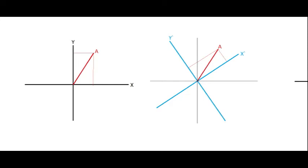In this video I'm going to talk about coordinate system transformations. What I have here is our original axes — the nice vertical and horizontal, 90 degrees from each other — and we have a vector a. With these thinner lines we can see the components of it: this is the y component here, and this up here would be the x component.